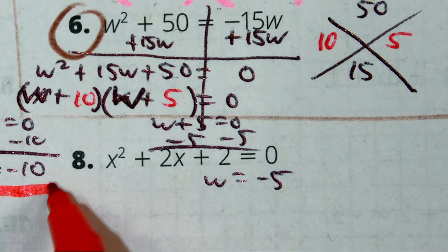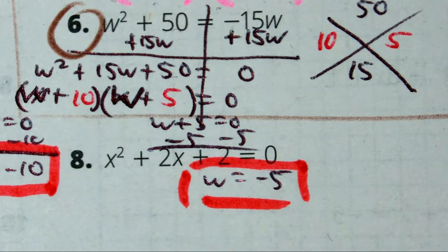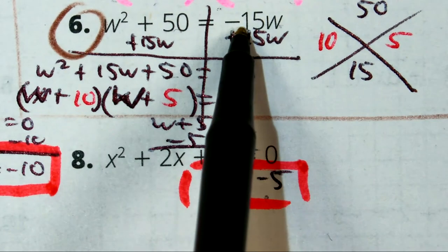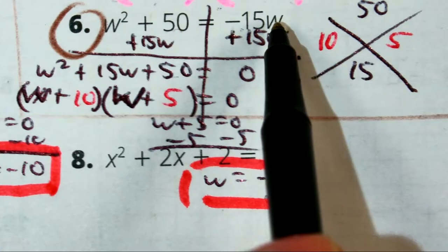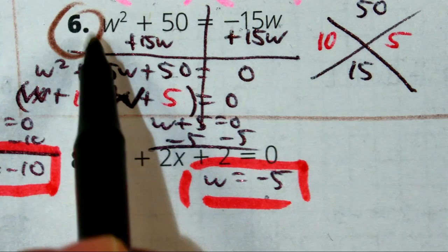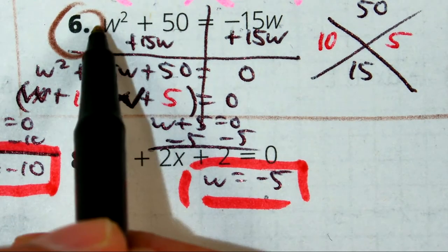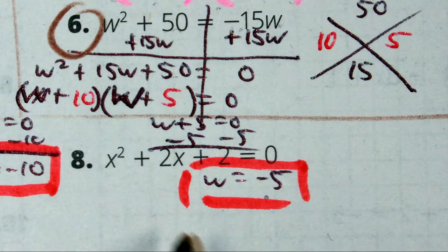Those are our two solutions. Remember what your solution represents. It makes the equation true. So, you could take negative 10. Or, let's use negative 5. Negative 5 times negative 15 is positive 75. Negative 5 squared. Negative 5 times negative 5 is 25. 25 plus 50 is 75. 75 is equal to 75. That's how you check your answer.